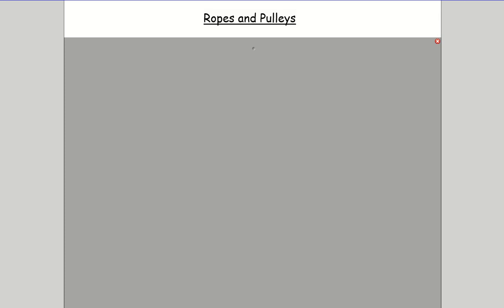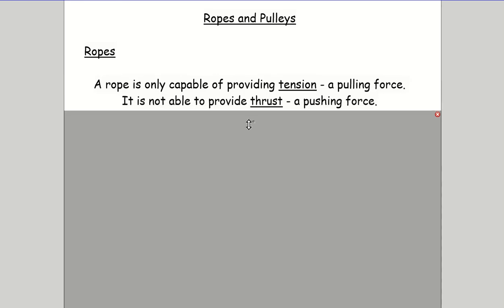In this video I'm going to introduce you to ropes, pulleys and connected objects. There's a bit of note taking to do first, so you might need to pause the video as we go along. In mechanics, you can pull things with a rope but you can't push things with a rope. The technical term is that they have tension, which is a pulling force, but no thrust, which is a pushing force. You can push something with a wooden stick but not with a rope - it would just go slack.